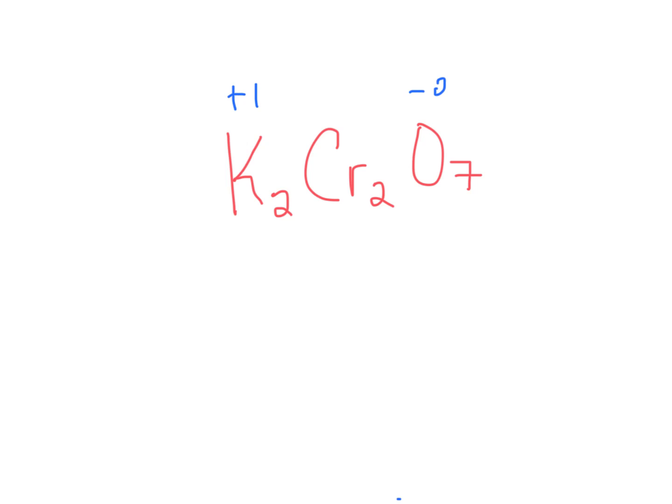But we do know that oxygen has an oxidation number of minus 2. Again, we always report the oxidation number per atom, not for all of that particular atom in a molecule. So here we have 2 times plus 1 for the two potassiums, plus 2 times X for our chromium, plus 7 times minus 2 for the oxygen.